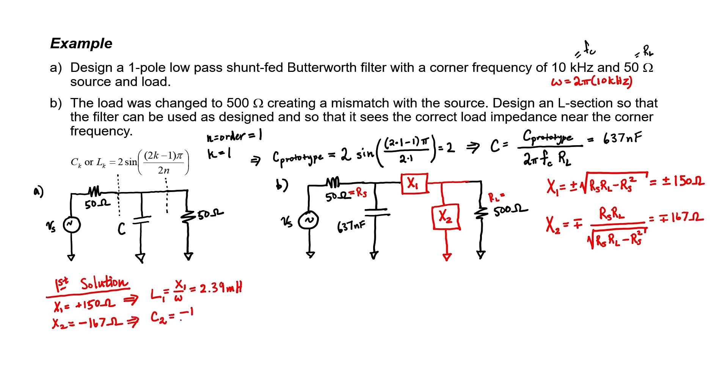Let's do something similar for reactive element number two, which because it's negative we know has to be a capacitor. We now have a valid solution to the problem. If x1 is just an inductor and x2 is just a capacitor at these values, then the L-section will work as designed.